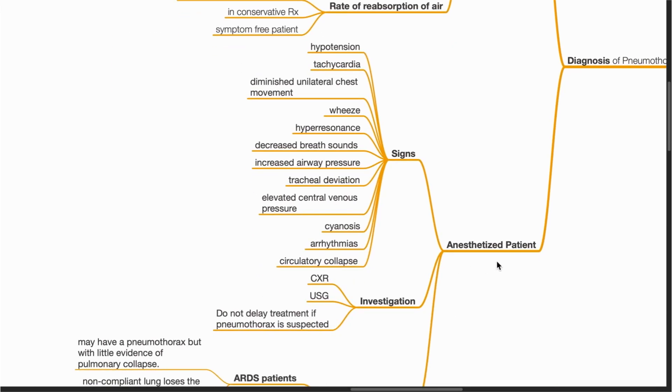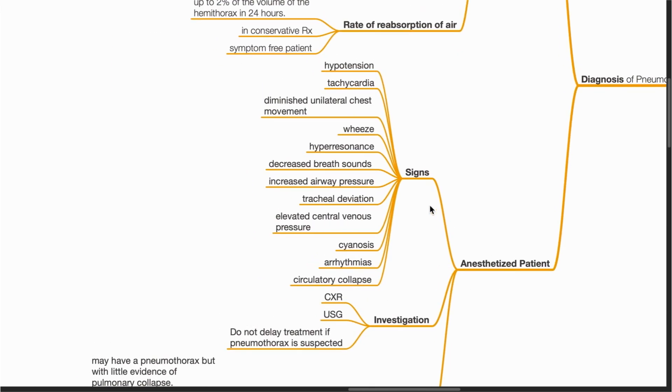In the anesthetized patient, signs of pneumothorax include hypotension, tachycardia, diminished unilateral chest movement, wheezing, hyperresonance on percussion, decreased breath sounds, increased airway pressure, tracheal deviation away from the affected side, elevated central venous pressure if measured, cyanosis, arrhythmia, and shock.